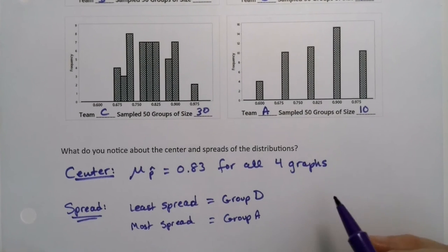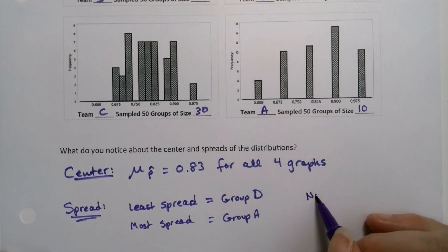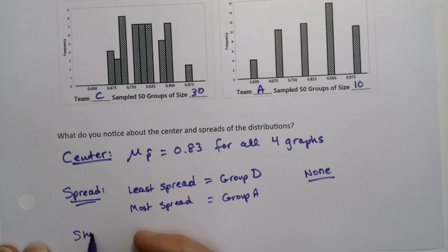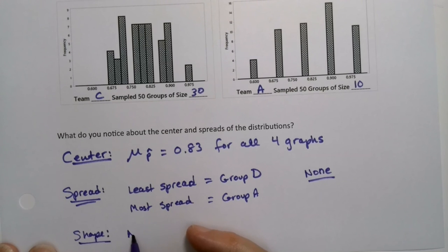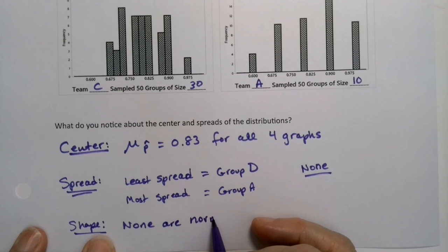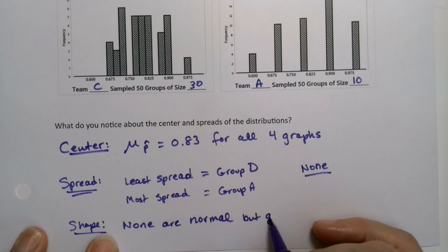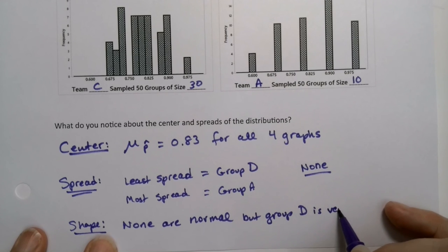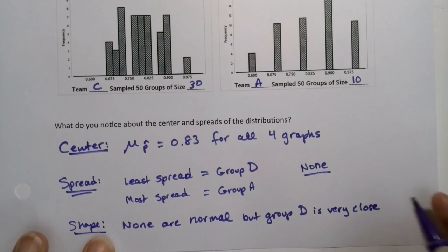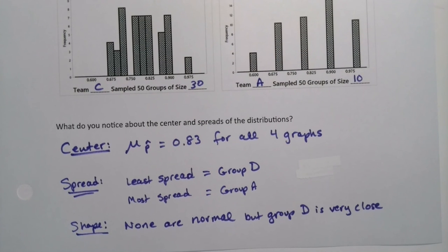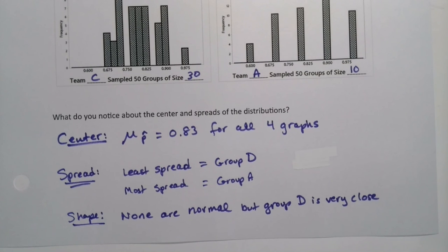And honestly, none of them are normal. None. Group D. So if I want to say for shape, none of them are normal, but group D is getting close. It's the closest to being normal of all of them. We could maybe make an argument that it is normal, but it's a little bit rough still. I'd like to be a little bit smoother to be a normal distribution.